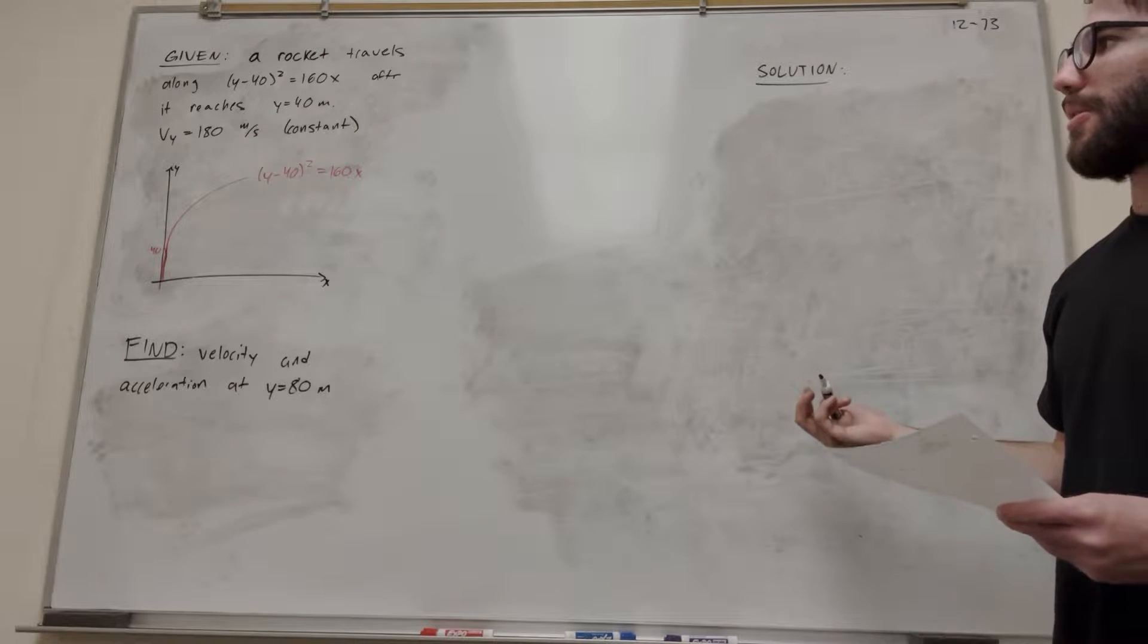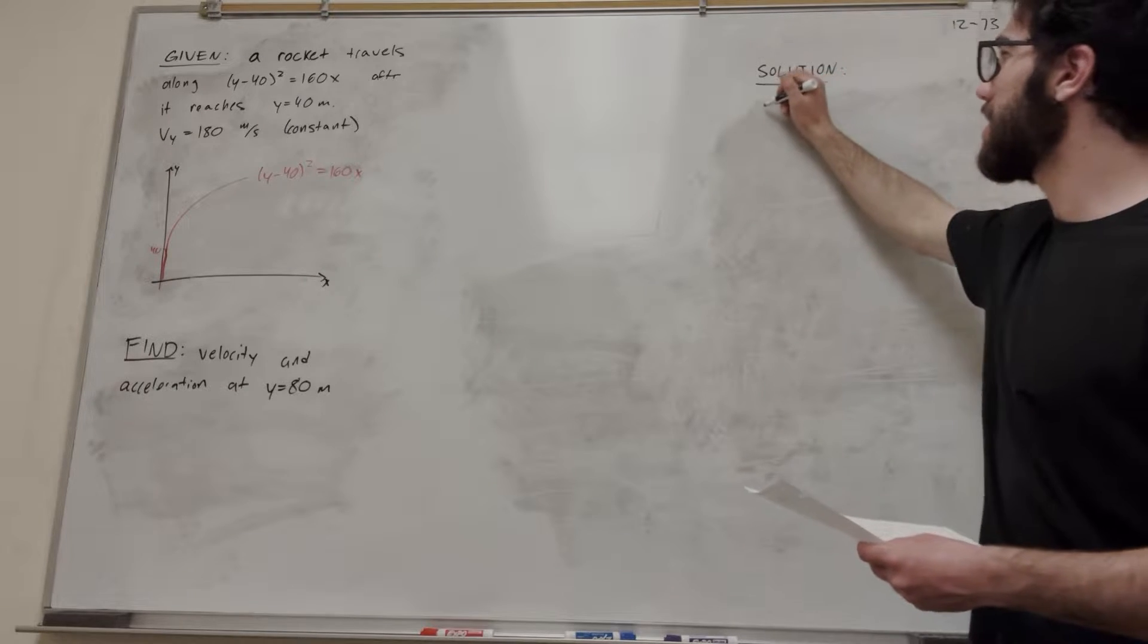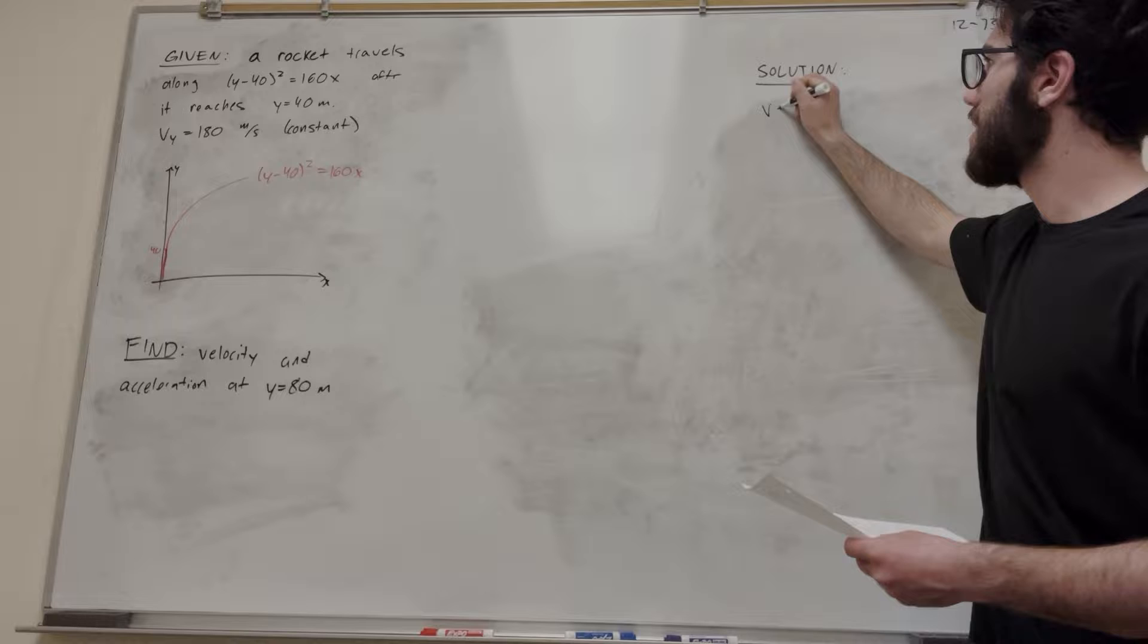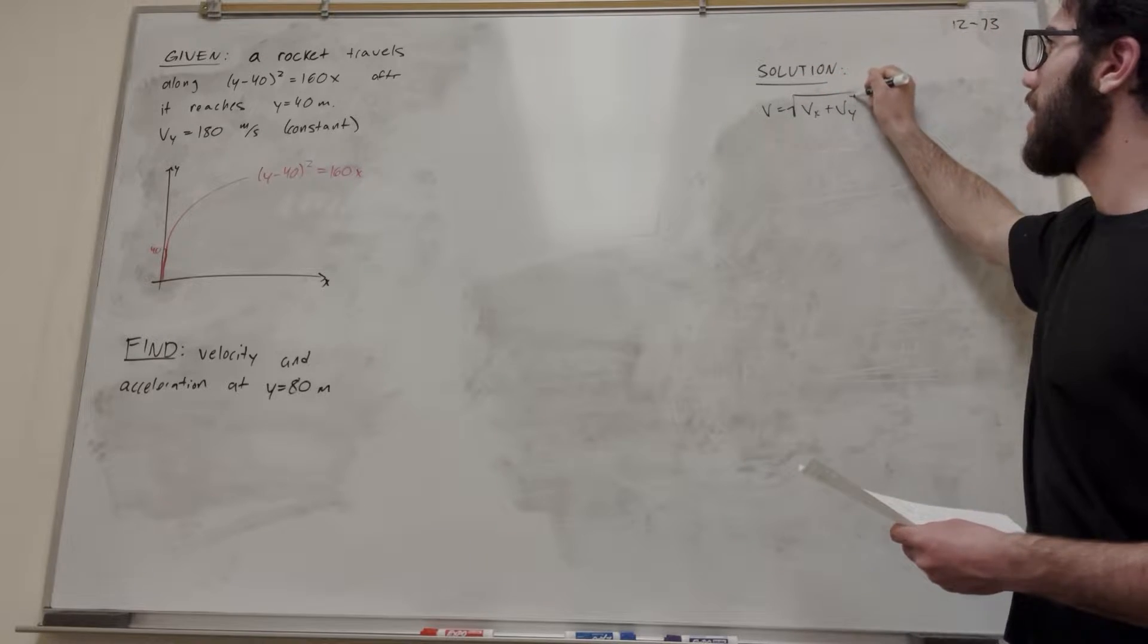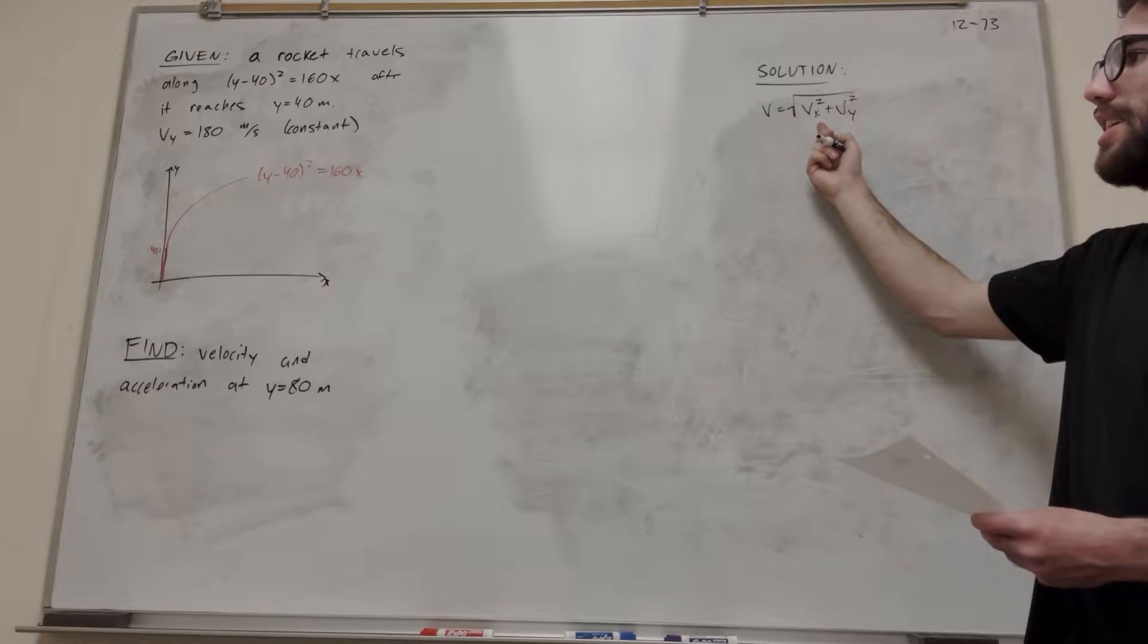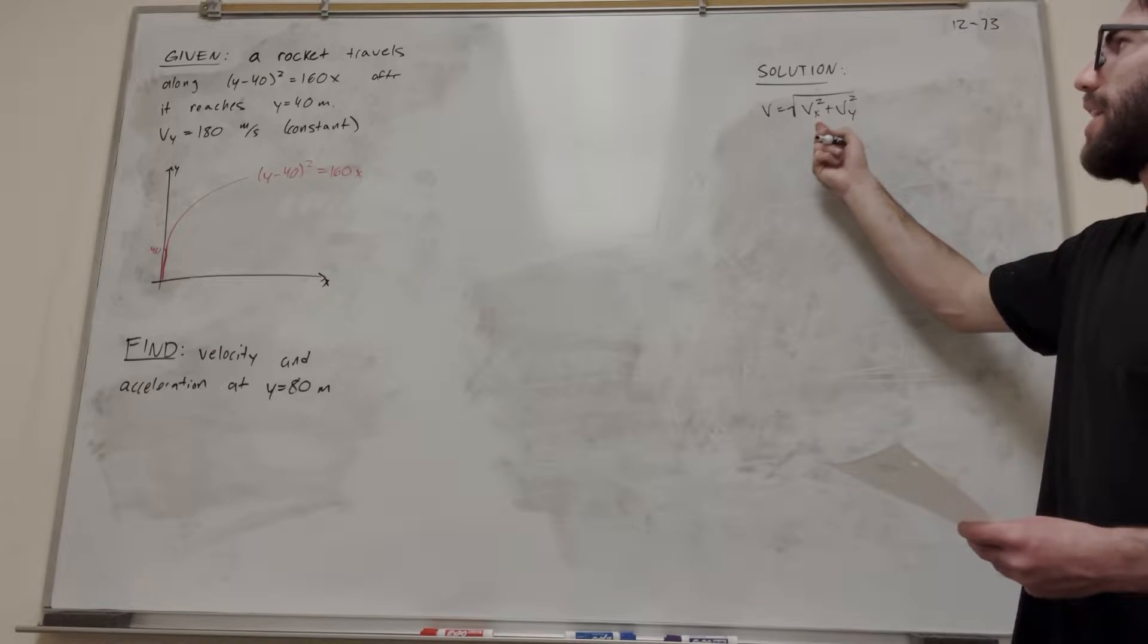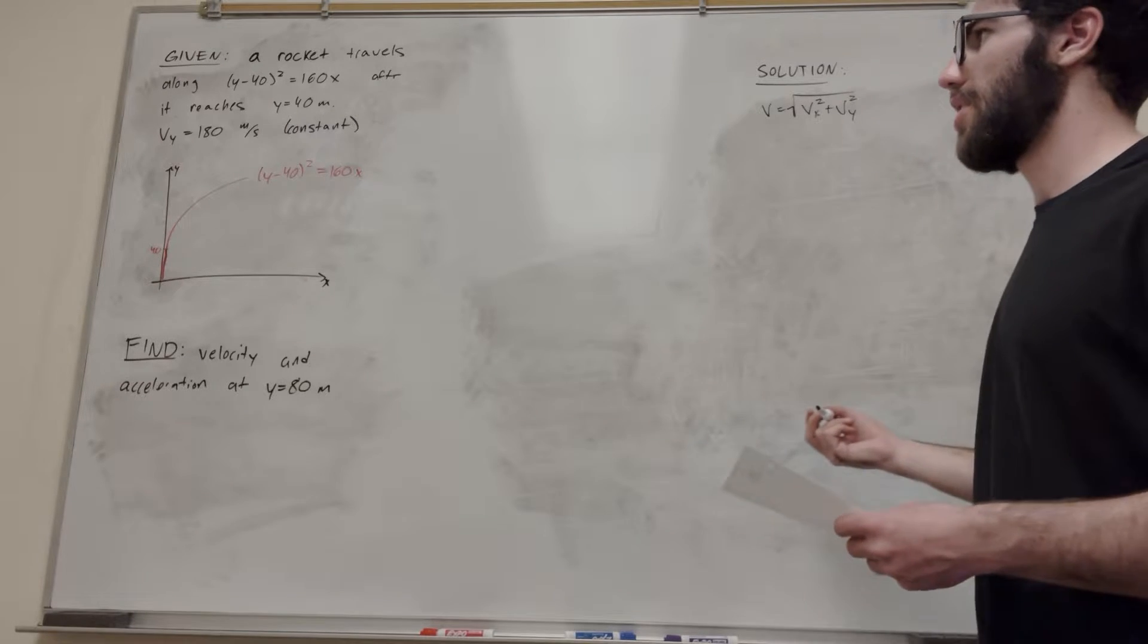When we're finding magnitude of velocity and magnitude of acceleration, we want velocity equal to the square root of velocity in the x squared plus velocity in the y squared. So we have velocity in the y, but we need velocity in the x. Our goal is to find velocity in the x and acceleration in the x.